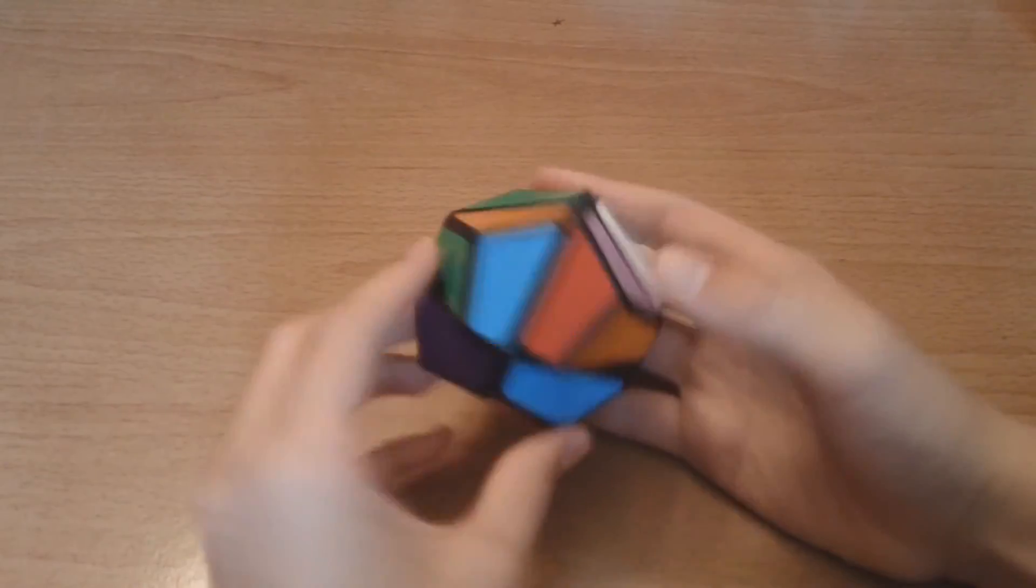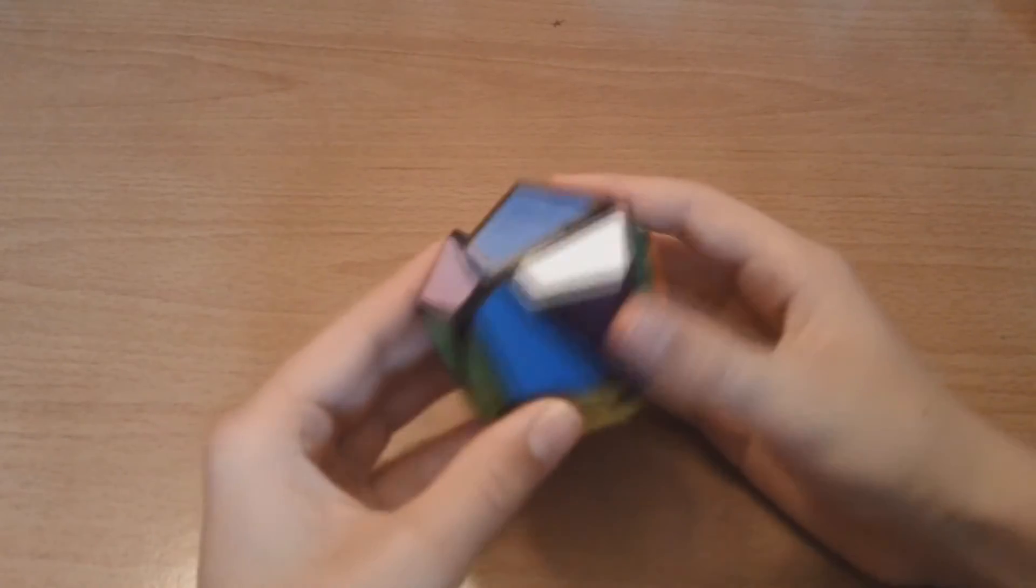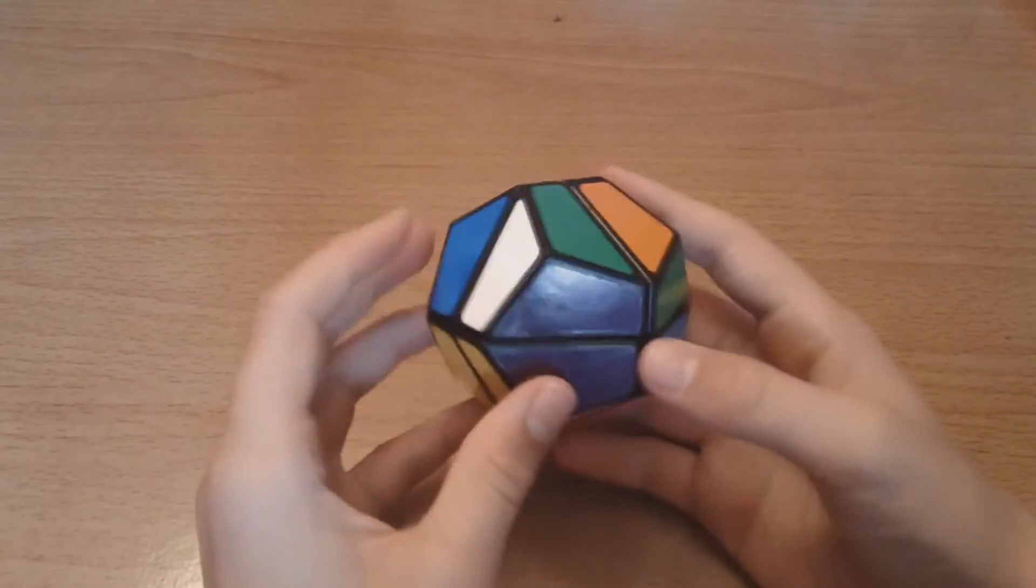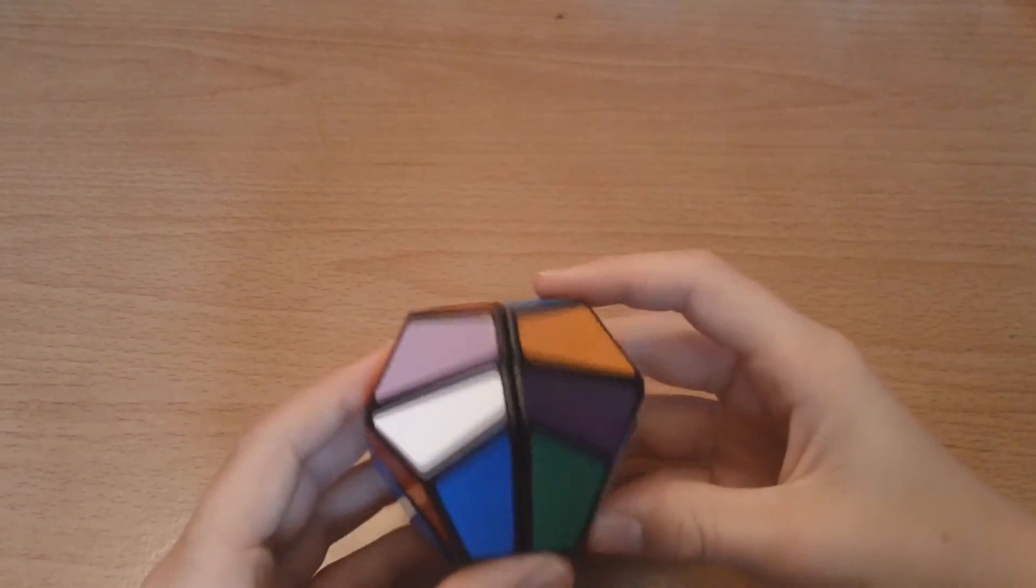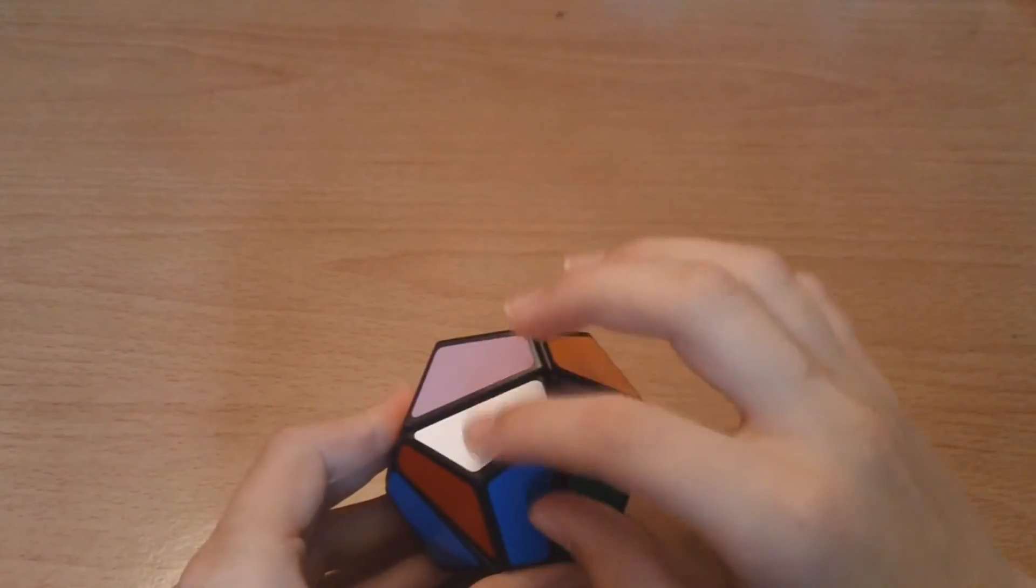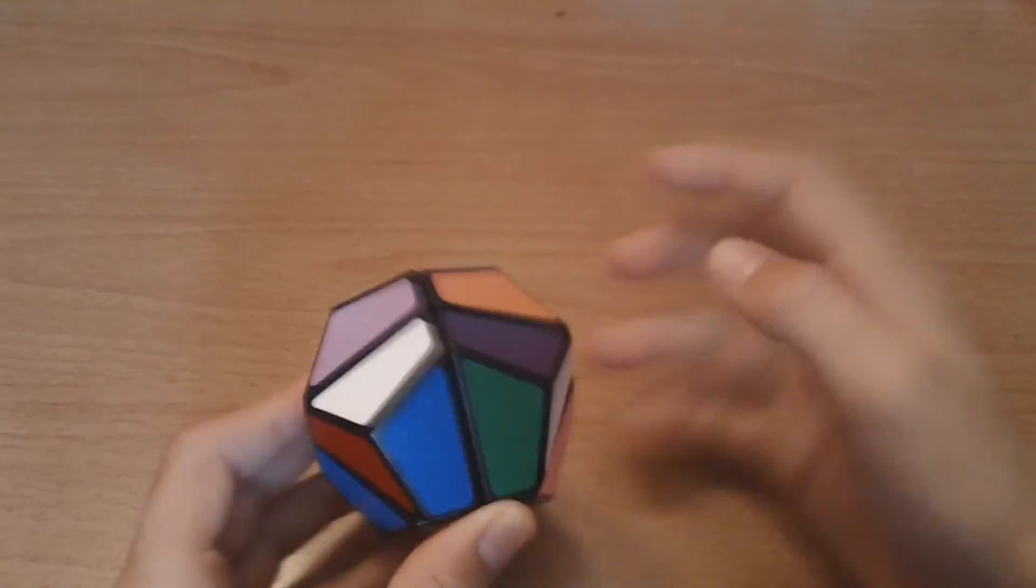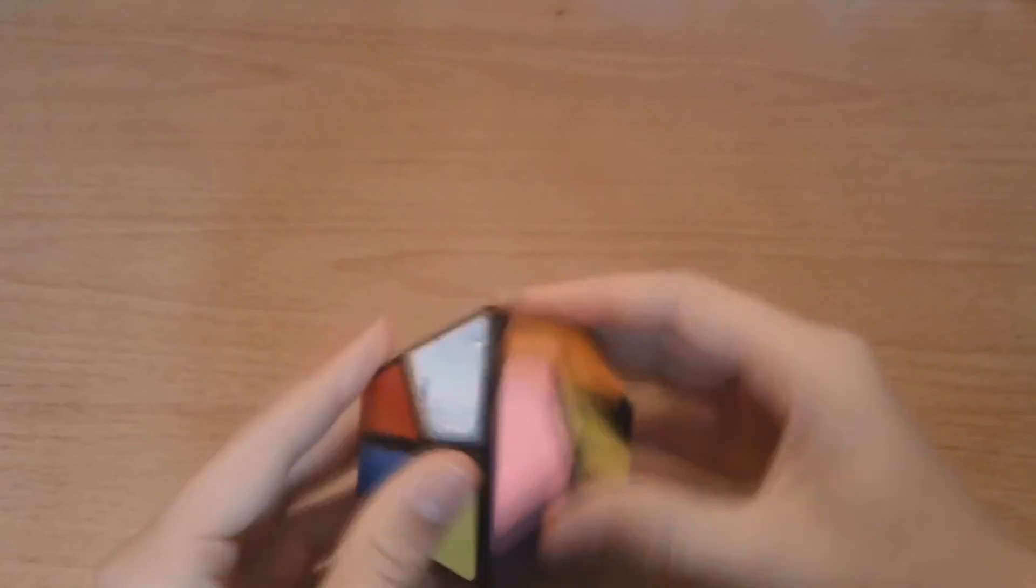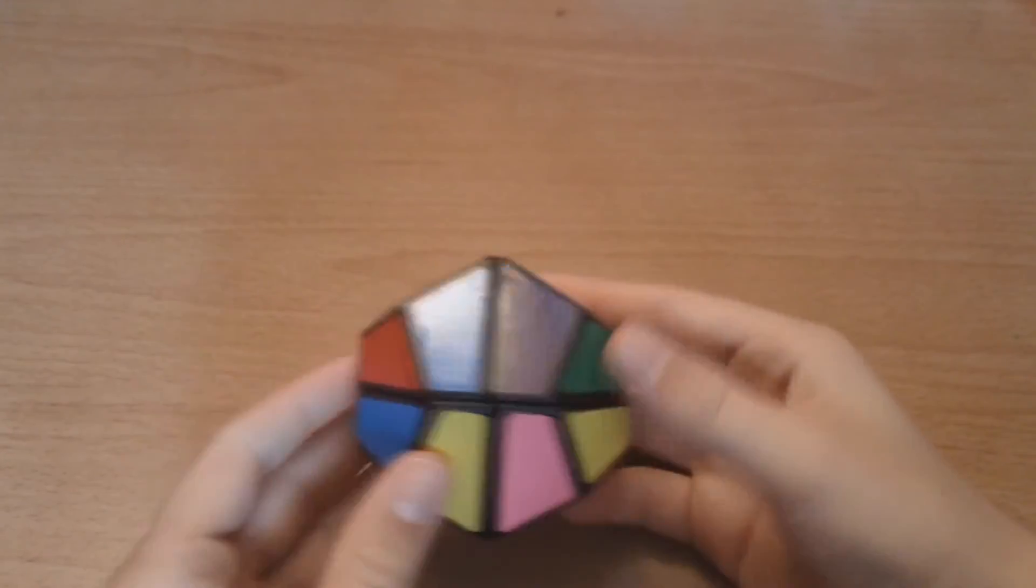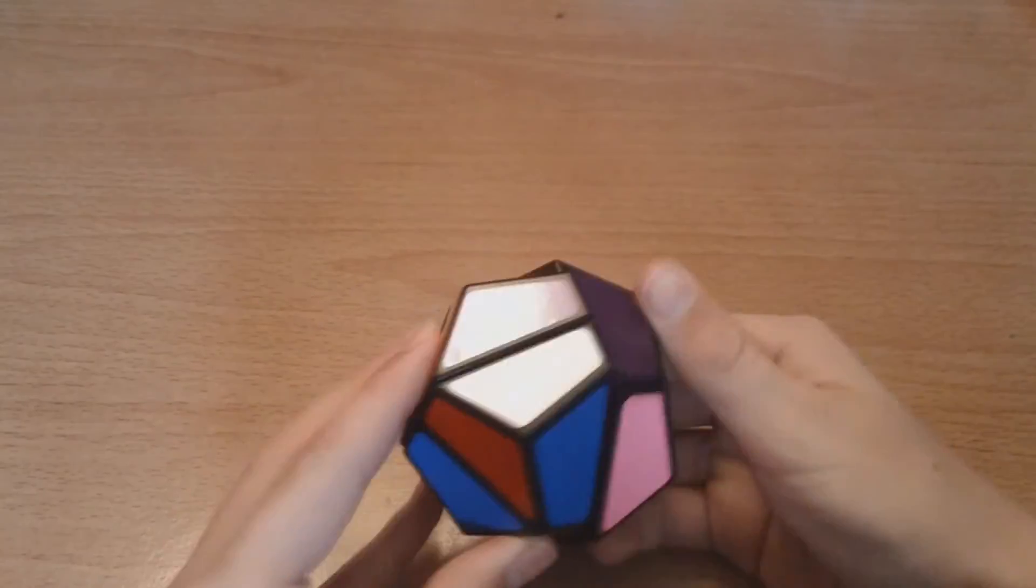And it doesn't really matter where you do that algorithm on the cube. And then you rotate it over. These two are in place and these two are in place. So, you just do the R-I-D-I moves again and your cube will be solved. And then finally your last case will just be having none of them solved. And all you have to do is rotate it into its correct spot. And then I'll just do the R-I-D-I moves from there. And then those are all of the cases that you will get.